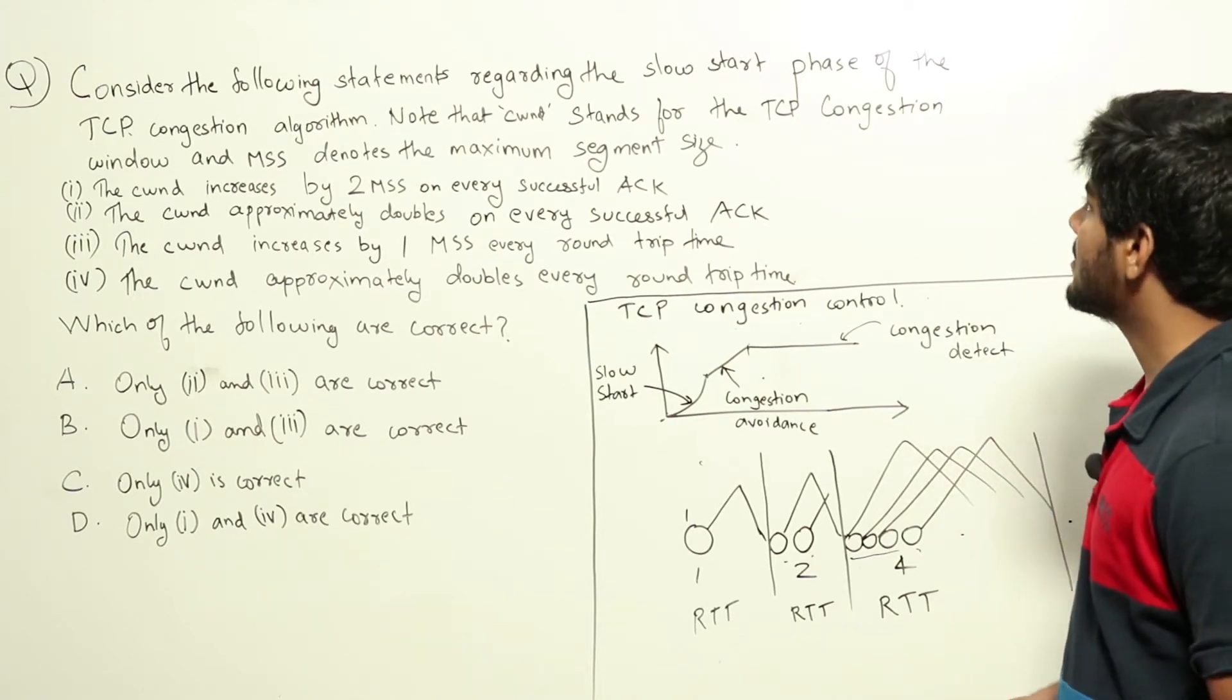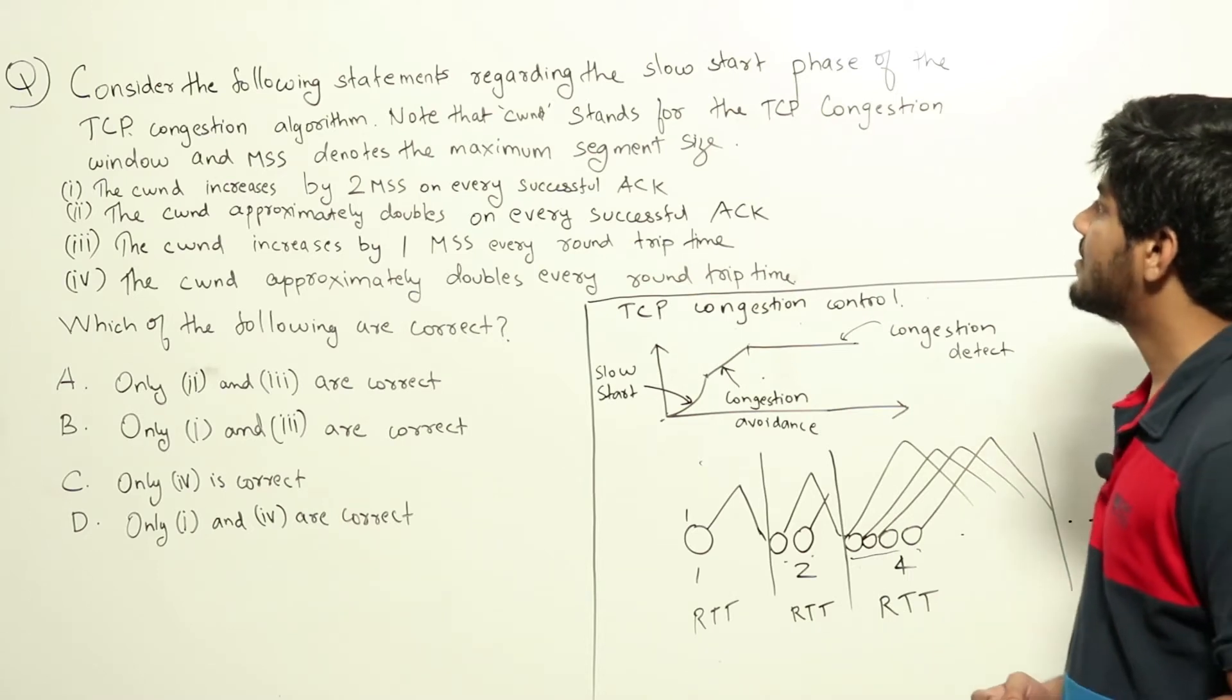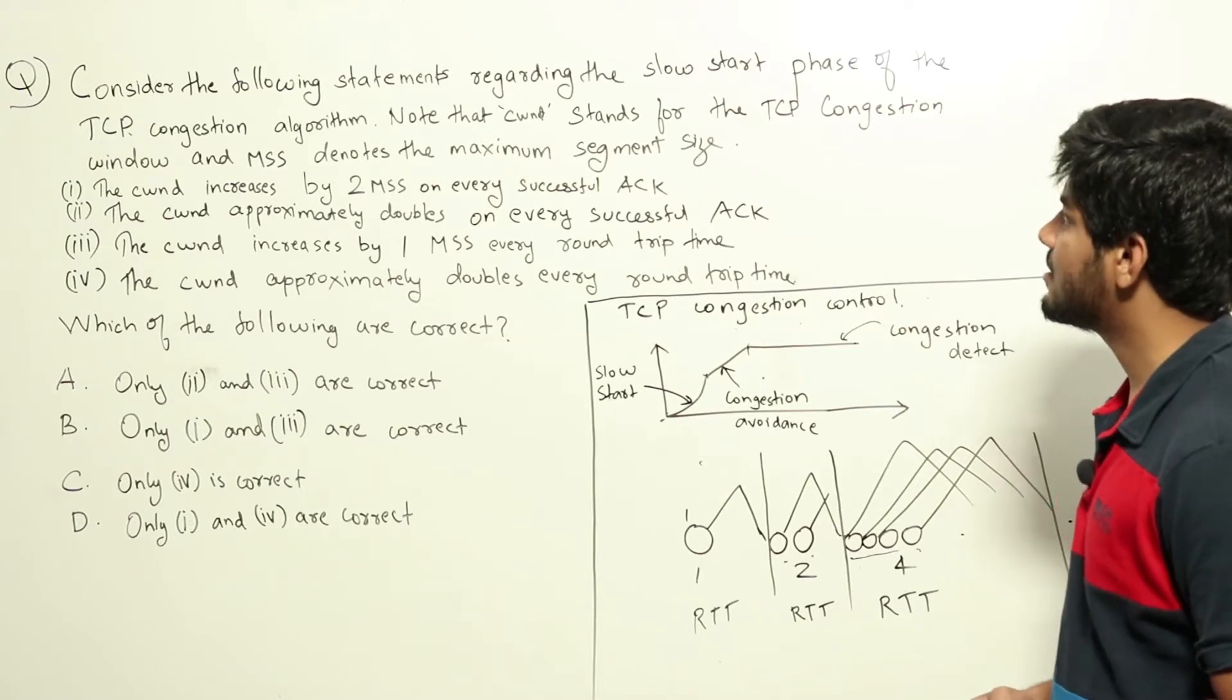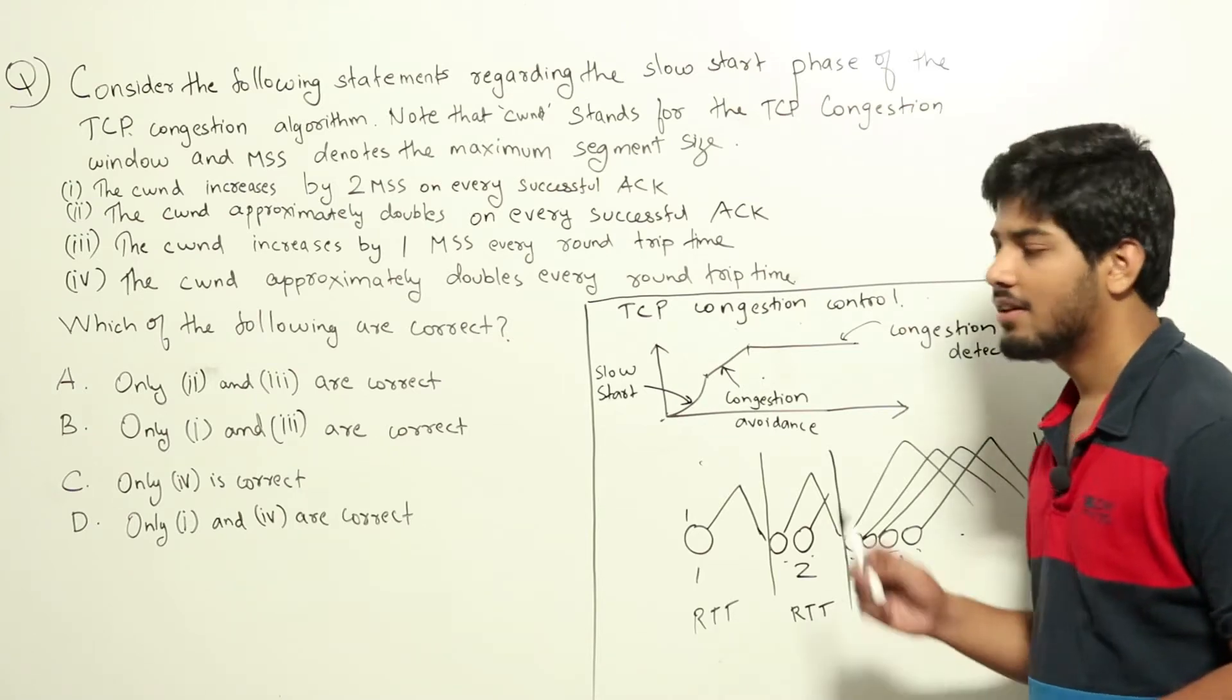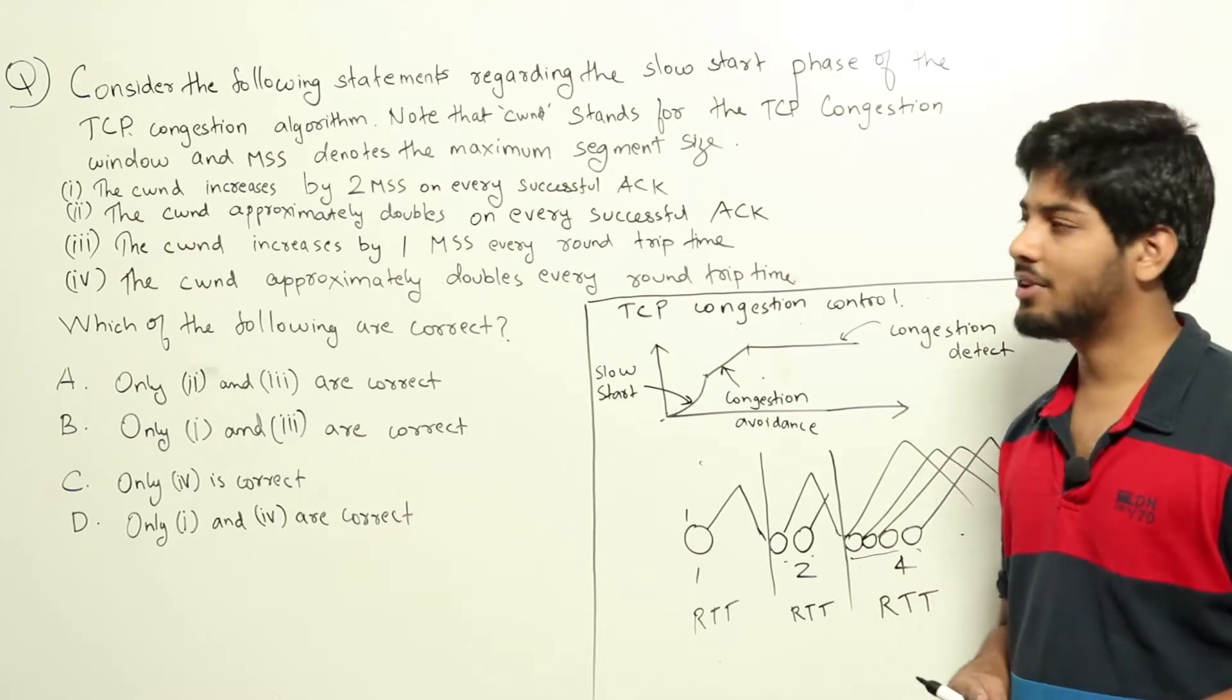Consider the following statements regarding the slow start phase of the TCP congestion algorithm. Note that CWND stands for the TCP congestion window and MSS denotes the maximum segment size. This is a question from TCP congestion control algorithm coming from computer networks section.